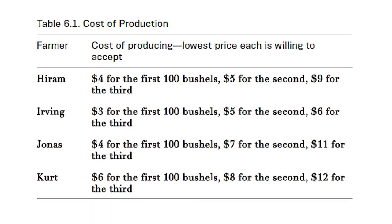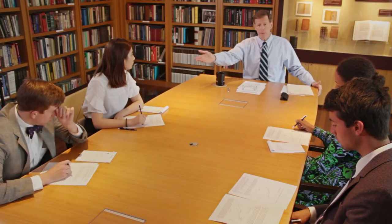The supply curve represents the cost to each farmer of bringing each additional unit of corn to market. If you look at the table of farmers — Hiram, Irving, Jonas, and Kurt — I've simply made up the farmers and their costs, but it's representative of reality. There are different farmers and suppliers spread all over the landscape. Because of soil fertility, transportation costs, or difficulty hiring workers, there are all sorts of reasons why costs will be different.